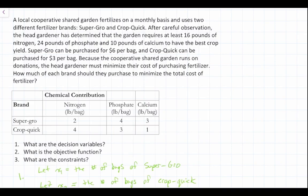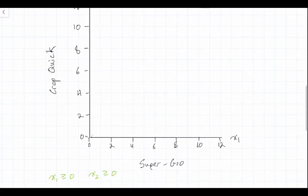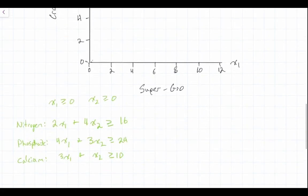Let's dive right in. We already established our constraints in the previous video. As a reminder, the constraint for nitrogen is 2x1 plus 4x2 must be greater than or equal to 16. The constraint for phosphate is 4x1 plus 3x2 must be greater than or equal to 24. And the constraint for calcium is 3x1 plus x2 greater than or equal to 10. Let's start plotting these by finding the x1 and x2 intercepts, beginning with the nitrogen constraint.